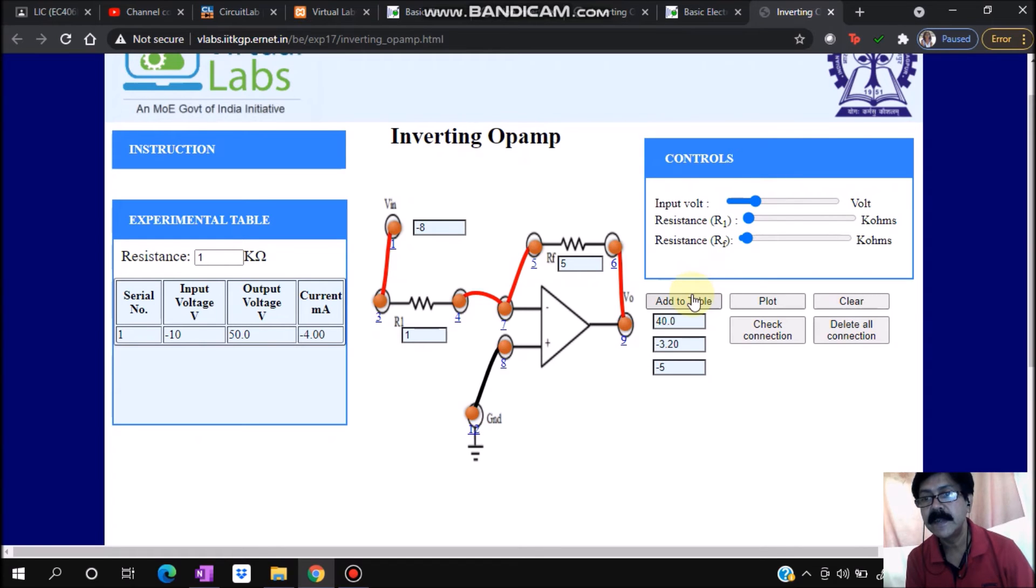Similarly, you can go for a change of minus 2, then add to table. In this way you can go one by one in steps of 2.